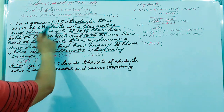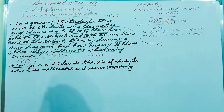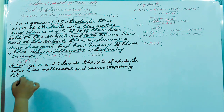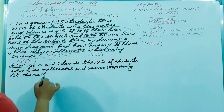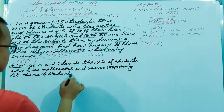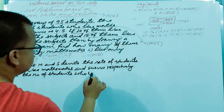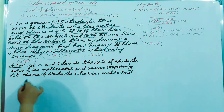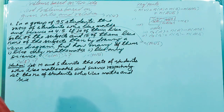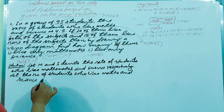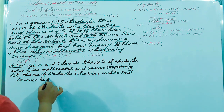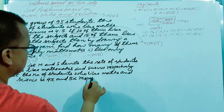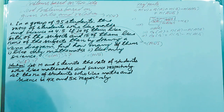Since the number of students who like maths and science is given in ratio, we suppose: let the number of students who like maths and science be 4x and 5x respectively.